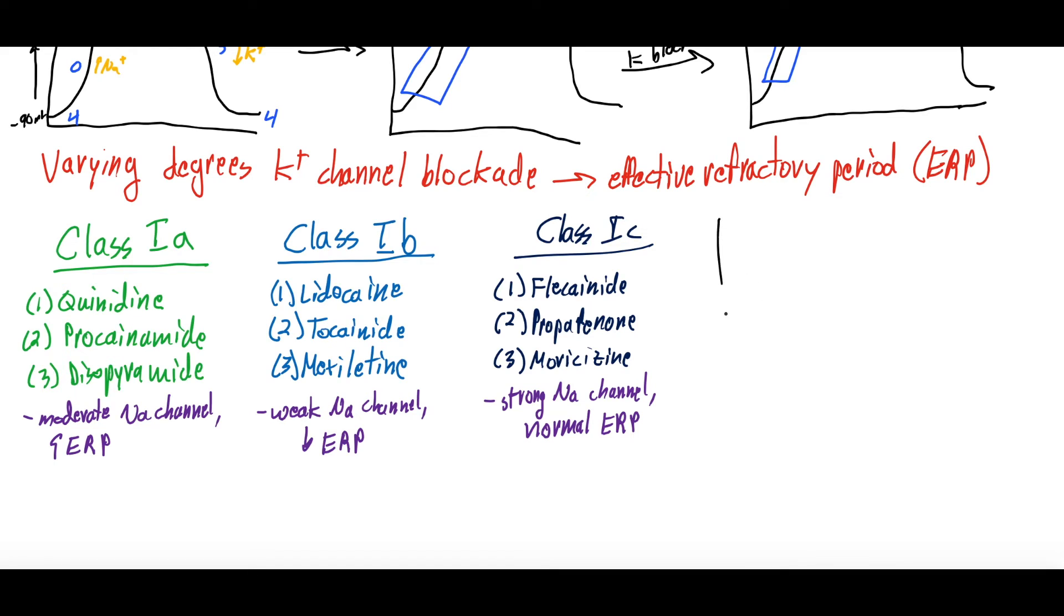What does this look like in terms of the cardiac action potential? Well, we'll say this is the normal cardiac action potential. And then Class 1A, which we'll put in green, we said is a moderate sodium channel blocker, right? And it increases the effective refractory period. So we're going to get that decreased slope we talked about, and then we're going to have an increased refractory period. And here is the sodium blockade, phase 0, and then here is the increase in the refractory period with phase 2 from the potassium channel blockade.